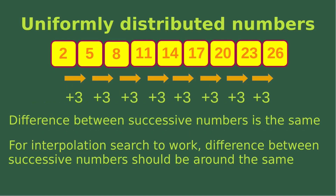Before we talk about the search process, we have to understand the concept of uniformly distributed numbers. Interpolation search works better when the elements are uniformly distributed. We can see these numbers on the slide, and the difference between any two successive numbers is the same — which is 3 in this case. If you have such an array of uniformly distributed numbers, then the interpolation search process would work pretty well.